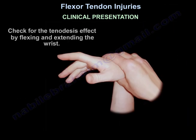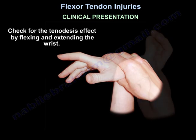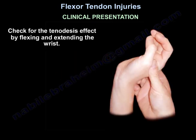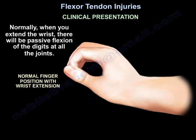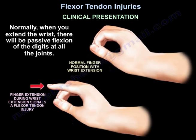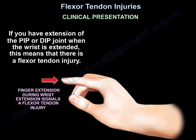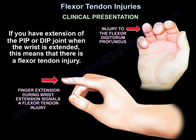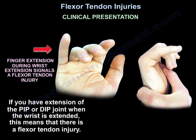Check for the tenodesis effect by flexing and extending the wrist. Normally when you extend the wrist, there is passive flexion of all digits. If you have extension of the PIP or DIP joint when the wrist is extended, it means there is a flexor tendon injury. Finger extension during wrist extension signals a flexor tendon injury.